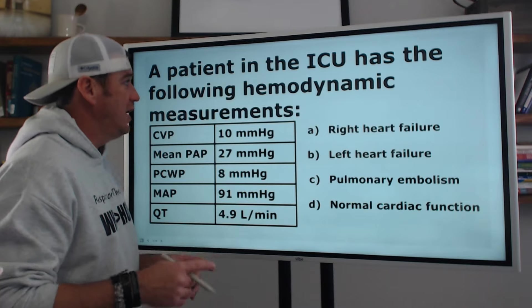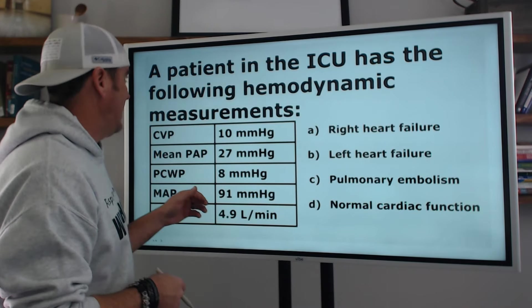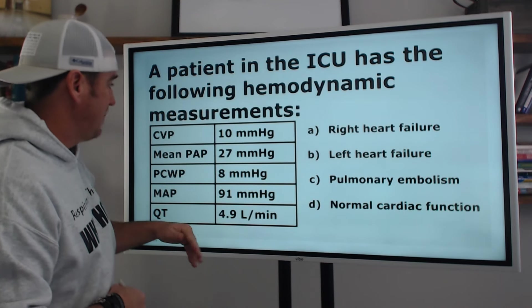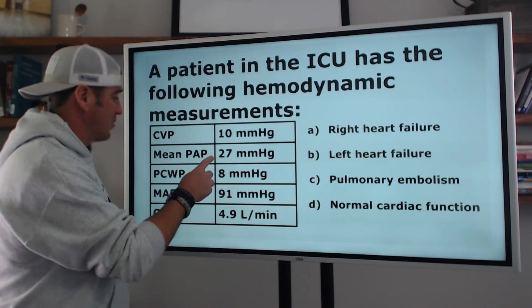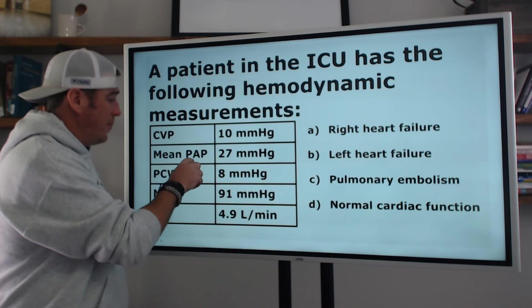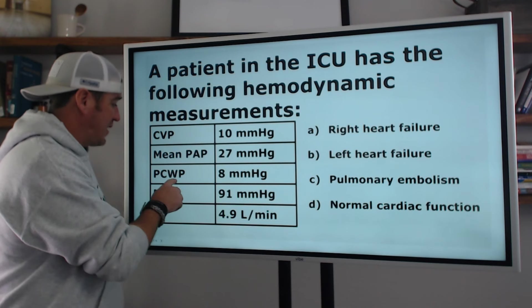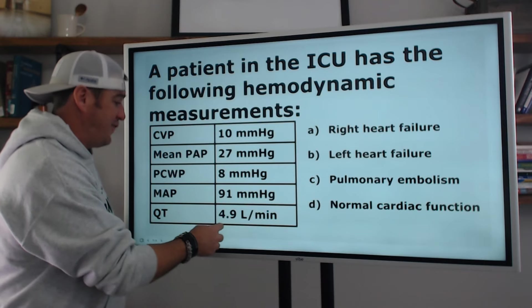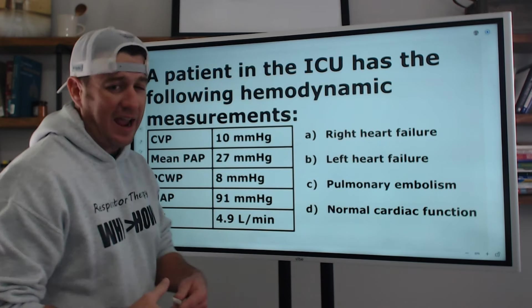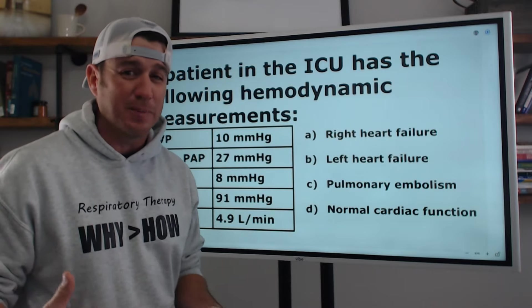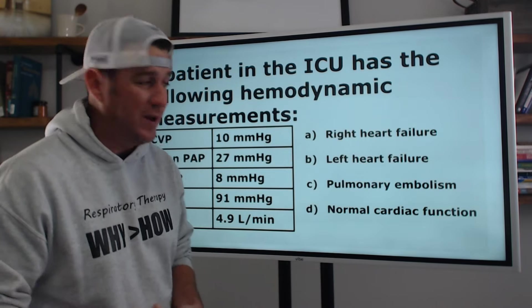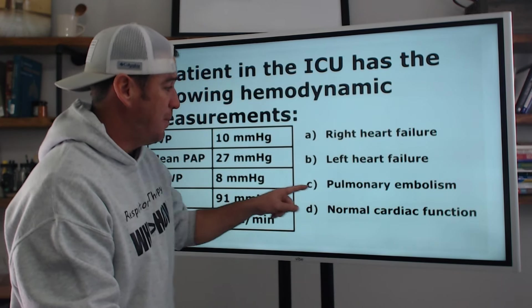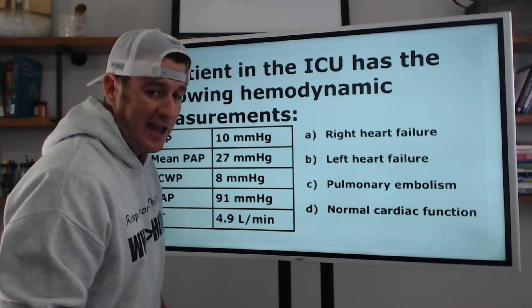Let's get back to the question we're answering here today. A patient in the ICU has the following hemodynamic measurements: CVP 10 millimeters of mercury, mean pulmonary artery pressure 27, pulmonary capillary wedge pressure 8, mean arterial pressure 91, cardiac output 4.9 liters per minute. The question asks: what are these findings most consistent with? Here are the options: right heart failure, left heart failure, pulmonary embolism, or normal cardiac function.